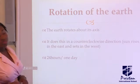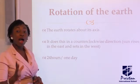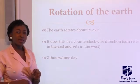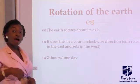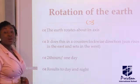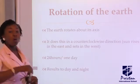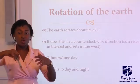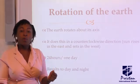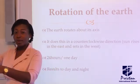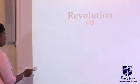The earth rotates around its axis in 24 hours, or one day. This rotation leads to day and night. When the earth is rotating towards the sun, we experience daytime, but when it is going away from the sun, we experience night.